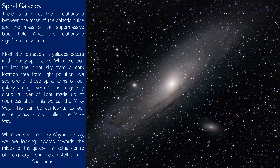Most star formation in galaxies occurs in the dusty spiral arms. When we look up into the night sky from a dark location free from light pollution, we see one of those spiral arms of our galaxy arcing overhead as a ghostly cloud — a river of light made up of countless stars. This we call the Milky Way. Our entire galaxy is also called the Milky Way, and when we see it in the sky, we are looking inwards towards the middle of the galaxy. The actual centre lies in the constellation of Sagittarius.